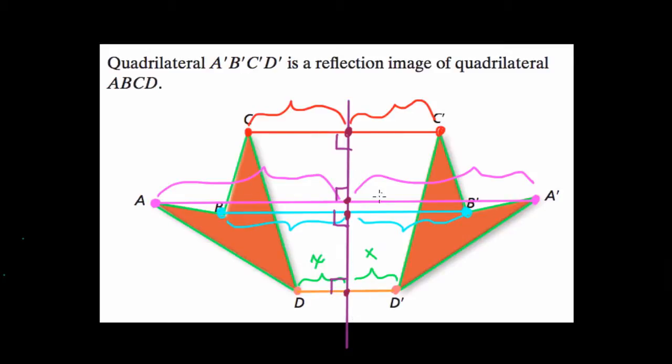And that's always the case. It's really helpful to think about the line that connects corresponding points. Again, all we're saying about these corresponding points is that they're in the same relative location, and their distances from the line of symmetry have to be equal. Otherwise, you don't have a reflection. Hope that helped. Thank you.